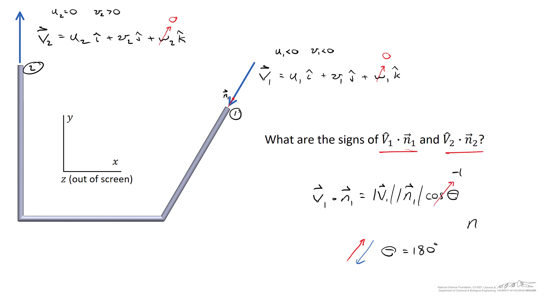The cosine of 180 degrees equals negative 1. Since the magnitude of n1 is 1 and the magnitude of velocity is positive, v1 dot n1 must be less than zero. In fact, v1 dot n1 equals the negative magnitude of v1.